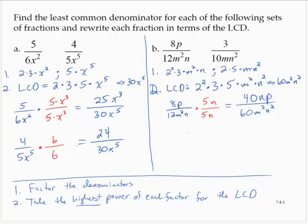And the second fraction: 3 over 10mn squared. I have to multiply that denominator by something to get 60m squared n squared. 10 times 6 is 60, and I would also need a factor of m. So that gives me 18m in the numerator, resulting in 18m over 60m squared n squared.